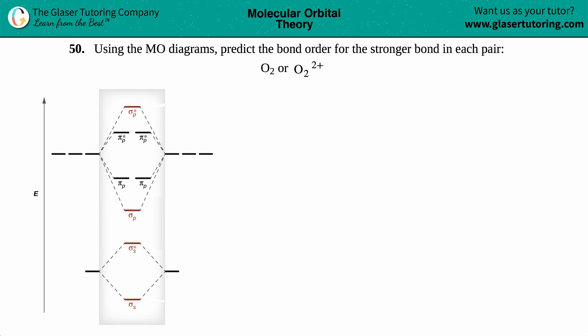Number 50, using the molecular orbital diagrams predict the bond order for the stronger bond in each pair. Then we have O2 or O2 2+. So I already have the appropriate molecular orbital diagram for oxygen. Oxygen does not exhibit SP mixing, and therefore its molecular diagram is very nice and symmetrical. So this is the correct one for oxygen, and now we're just going to use it to find out the bond orders.